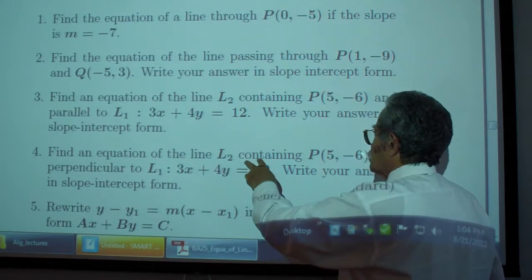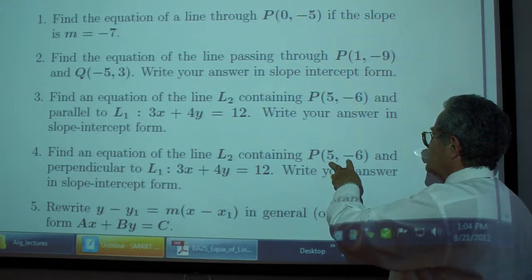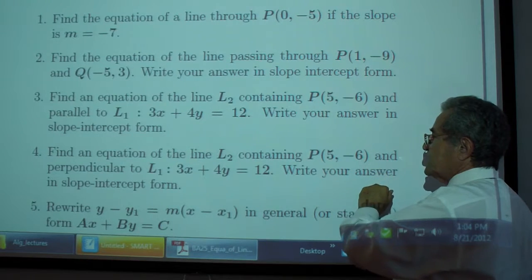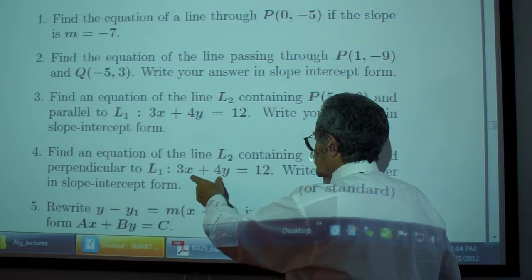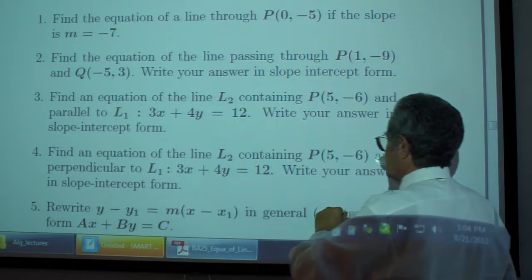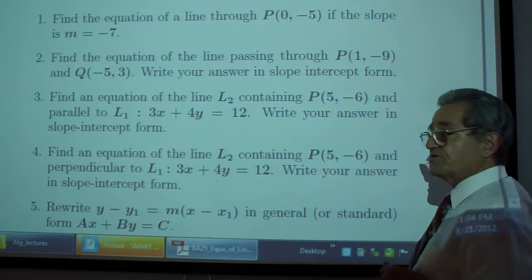Problem 4: Find an equation of the line L₂ containing the point P(5, -6) and perpendicular to L₁: 3x + 4y = 12. Write your answer in slope-intercept form.